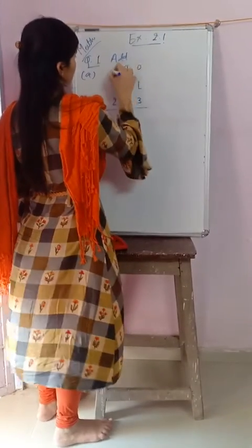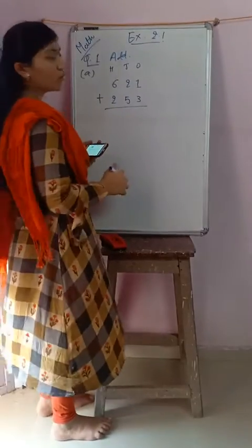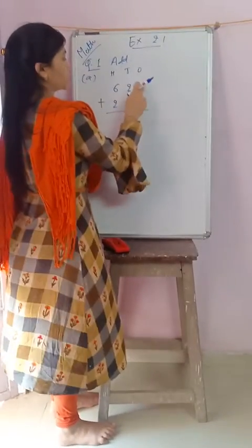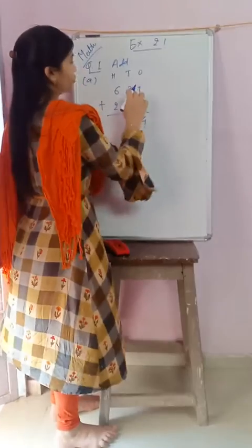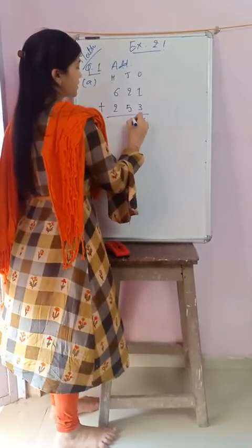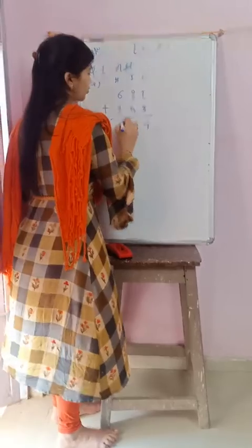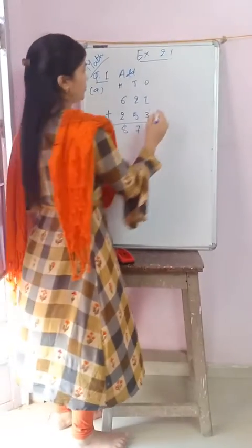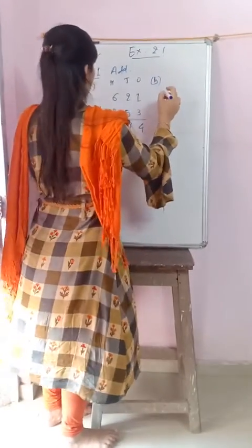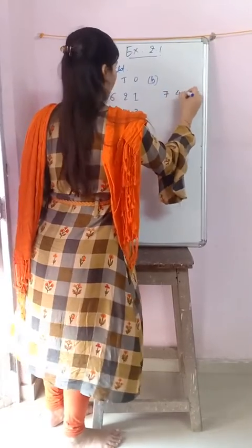Ones, tens, and hundreds. As you know, we have to start from the ones place. One plus three equals four, two plus five equals seven, six plus two equals eight. So the answer is 874.